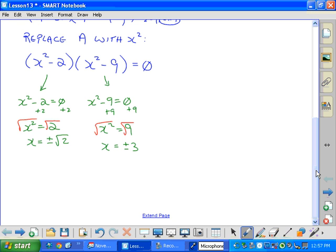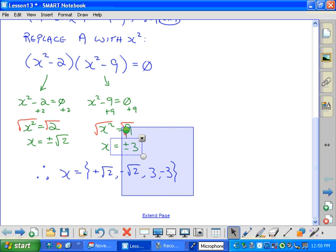So, therefore, x would equal, and there's technically four solutions. And, I'll write them all out. Positive root 2, negative root 2, 3, and negative 3. So, there's one possible solution method.